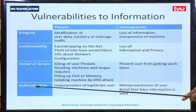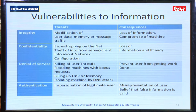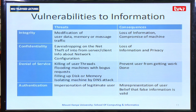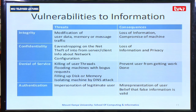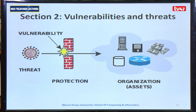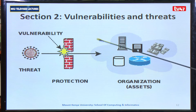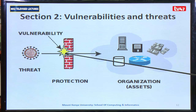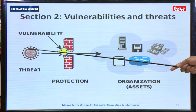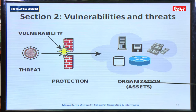Under authentication, when there is a threat, it results in impersonation of the legitimate user, leading to the misinterpretation of user belief that false information is valid. Moving on to section two, we will expound more on vulnerabilities and threats. A vulnerability is simply a loophole — a backdoor available for a threat to access an organization's resources.